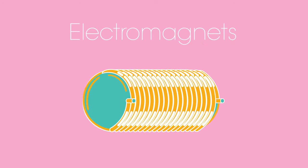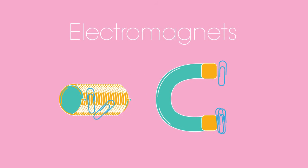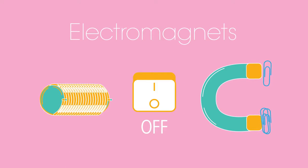Electromagnets are incredibly useful. They can do all the things a normal magnet can do, but can also be switched on and off.